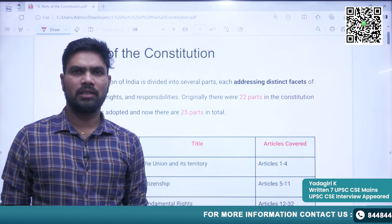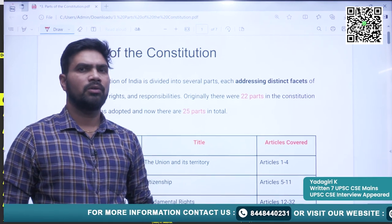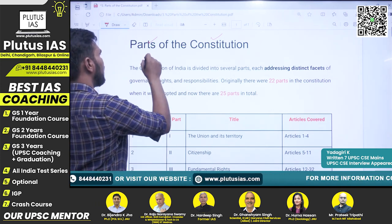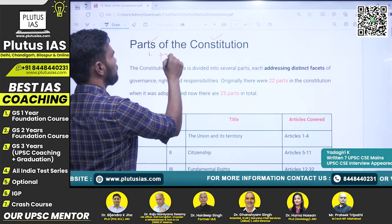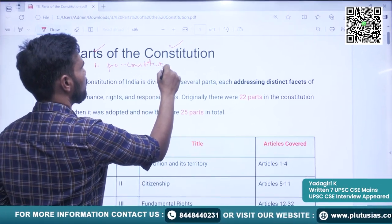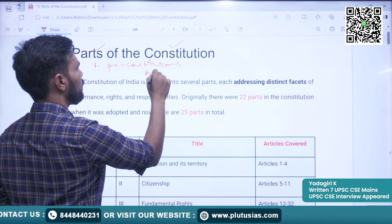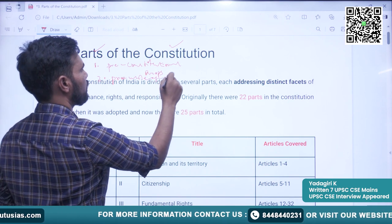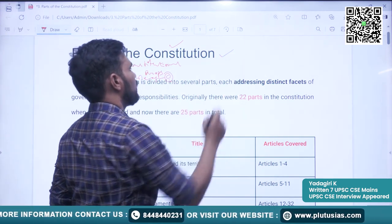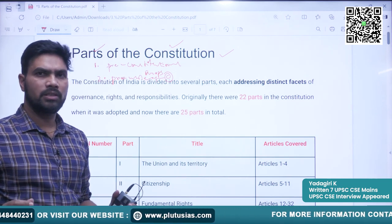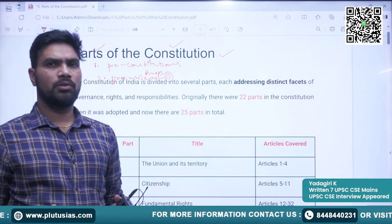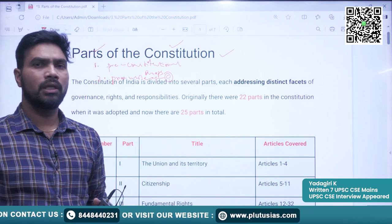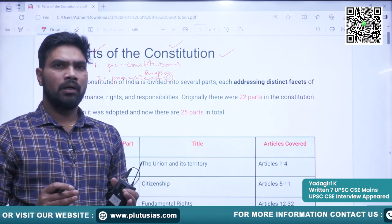Good morning students, welcome back to Plutus IAS. In our 95 days prelim challenge, today we are going to see the third topic — parts of the constitution. Earlier, in the first and second topics, we covered pre-constitutional developments and the preamble of the constitution. Today we are going to see the parts of the constitution. Basically, the parts of the constitution do not have much significance when it comes to interpretation or understanding of the constitution. We divided it for our convenience so that we can better understand the constitution.